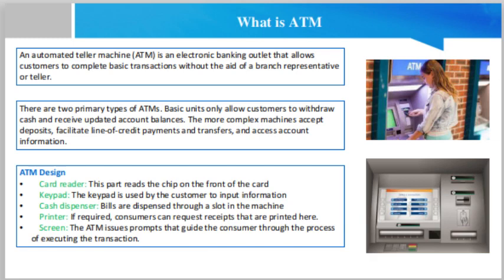Full-service machines now often have slots for depositing paper checks or cash. Banks place ATMs inside and outside of their branches. Other ATMs are located in high-traffic areas such as shopping centers, grocery stores, convenience stores, airports, bus and railway stations, gas stations, casinos, and restaurants. Most ATMs found in banks are multifunctional, while off-site ATMs tend to be primarily or entirely designed for cash withdrawals.